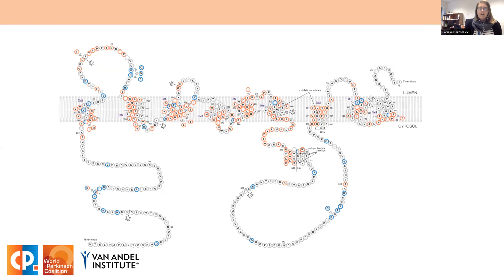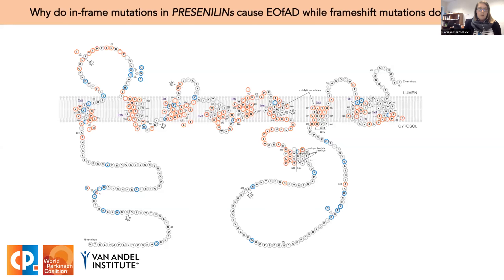There is one very important but simple rule: the reading frame preservation rule. It states that in-frame mutations in presenilin genes cause early onset Alzheimer's disease, while frameshift mutations do not cause early onset Alzheimer's disease. The molecular reason for this is unknown, and this leads to the key question I wanted to address: why do in-frame mutations in presenilins cause EOFAD while frameshift mutations do not? To address this, I generated mutant zebrafish modeling these types of mutations that are actually found in human patients.